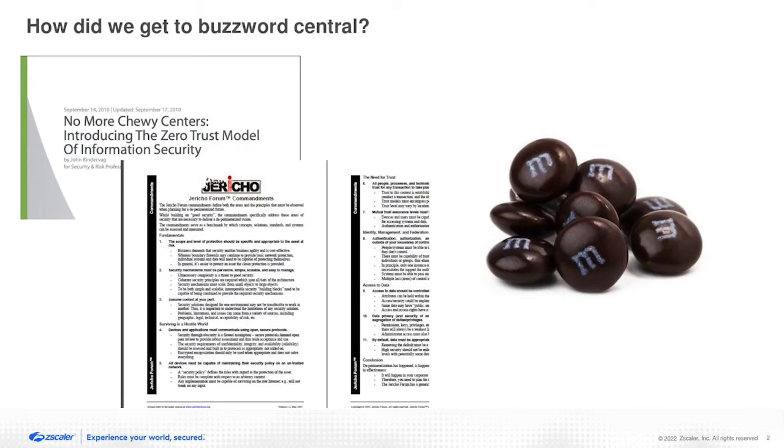How do we get to buzzword central? Zero trust is actually a term that's been around for a while — about 10 years or so. The original paper by John Kindervag came out probably in the early 2000s. Prior to that, it was technically thought of by a different name by the United States Department of Defense, probably as early as the 70s or 80s. Google also picked up on it with their BeyondCorp idea, which they never actually did anything with until very recently. So it's not something that came up in the last two years, although it certainly seems that way from its current popularity.